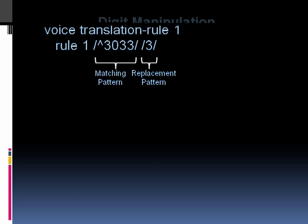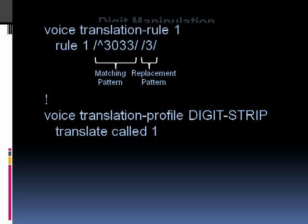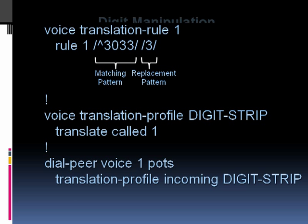That rule then needs to be applied to a voice translation profile. Here we're creating a voice translation profile called 'digit-strip.' We specify what we're translating — it could be the called number (DNIS), the ANI (caller ID), or a redirected call number (for example, when a call is forwarded to a voicemail server so it knows whose mailbox to use). We're keeping it simple here and translating the called number using voice translation rule 1. Once the profile is configured, we apply it — in this case to a POTS dial peer in the incoming direction using the 'translation-profile incoming' command.